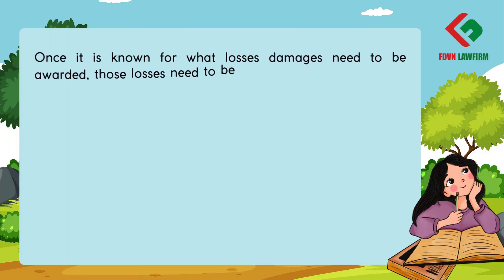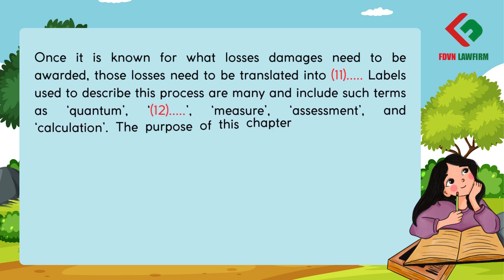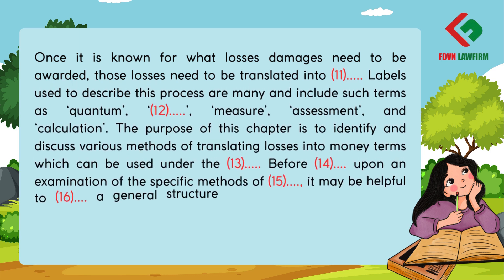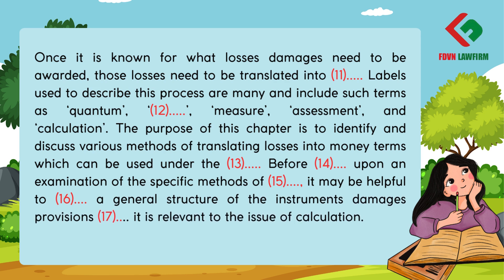Once it is known for what losses damages need to be awarded, those losses need to be translated into monetary terms. Labels used to describe this process are many and include such terms as quantum, quantification, measure, assessment, and calculation. The purpose of this chapter is to identify and discuss various methods of translating losses into money terms which can be used under the international instruments.